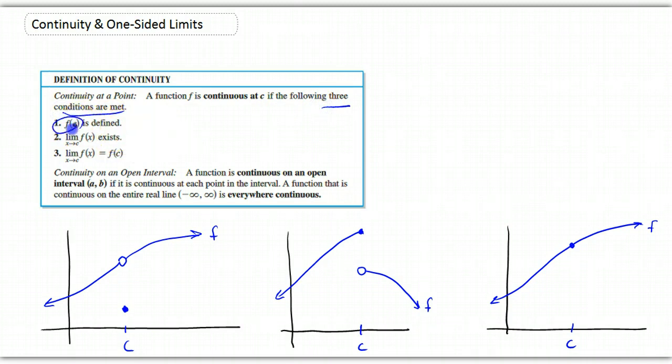First of all, we actually have to have a point, so f of c has to exist. And secondly, the limit as x approaches c of f of x exists. And finally, the limit has to equal the y value. If all three of those are met, then we have continuity at a point.